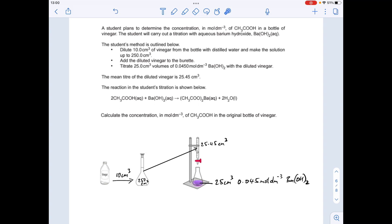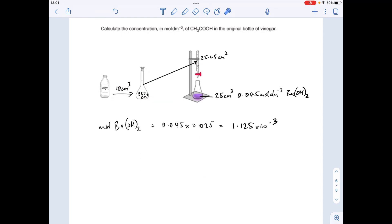Okay, so the first thing we're going to do is work out how many moles of barium hydroxide we used in the titration. So that's concentration times volume, but remember volume has to be in decimeters cubed. So you can see that's coming out at 1.125 times 10 to the minus 3 moles.